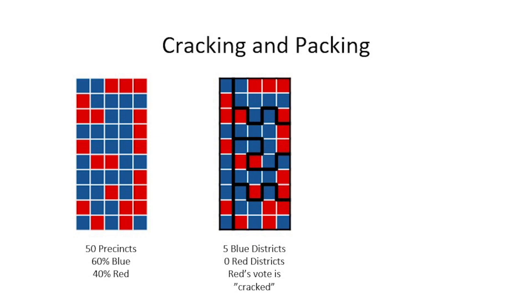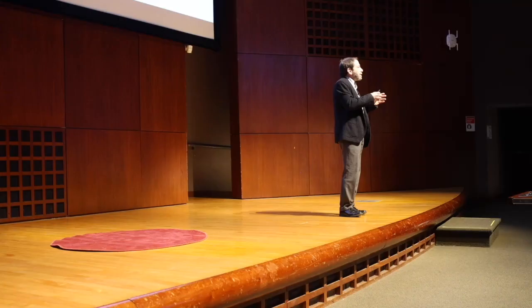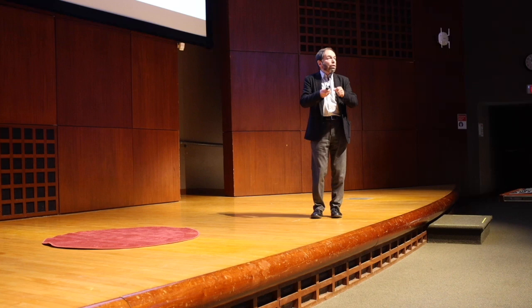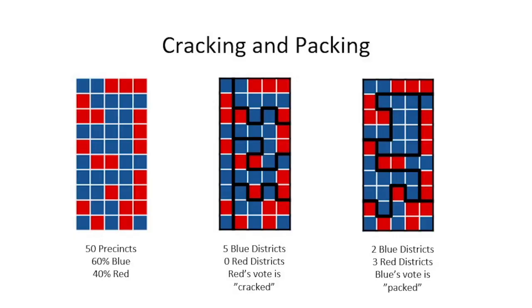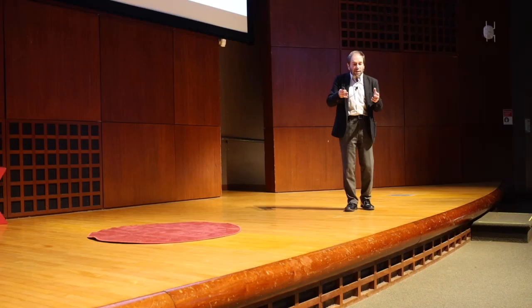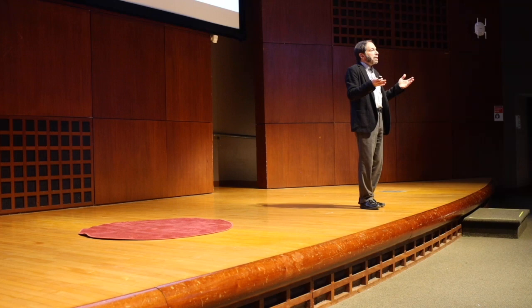If blue was in control and could draw the map, the state has five districts each with 10 precincts, indicated by the black lines. Each of those five districts has a majority of blue voters, so blue gets to control all of the seats. On the other hand, if red were drawing the map, it might pack all of the blue precincts into two central districts and thereby control the other three districts.